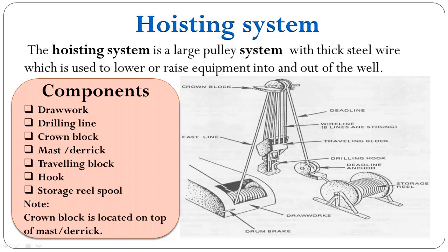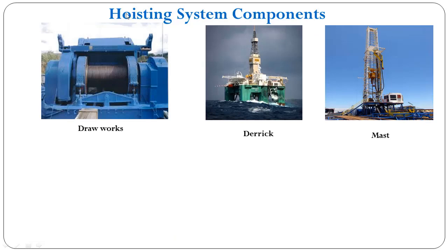The crown block has one sheave more than the number of sheaves on the traveling block. This means if the traveling block has five sheaves on it, then the crown block will have six sheaves. Now we will see the hoisting system components with their real pictures.